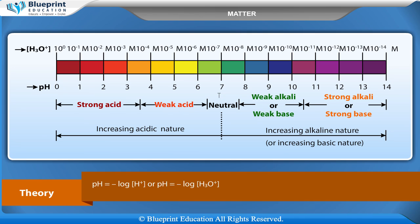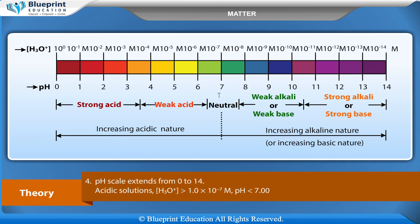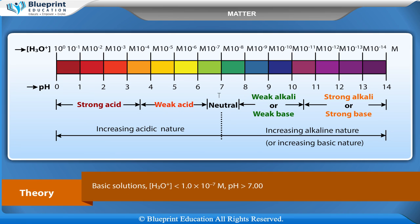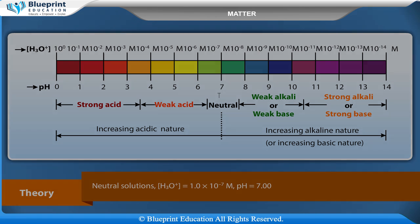The pH scale extends from 0 to 14. For an acidic solution, H₃O⁺ is greater than 1.0 × 10⁻⁷ mol/L and pH is less than 7. For a basic solution, H₃O⁺ is less than 1.0 × 10⁻⁷ mol/L and pH is greater than 7. For a neutral solution, H₃O⁺ is equal to 1.0 × 10⁻⁷ mol/L and pH is equal to 7.